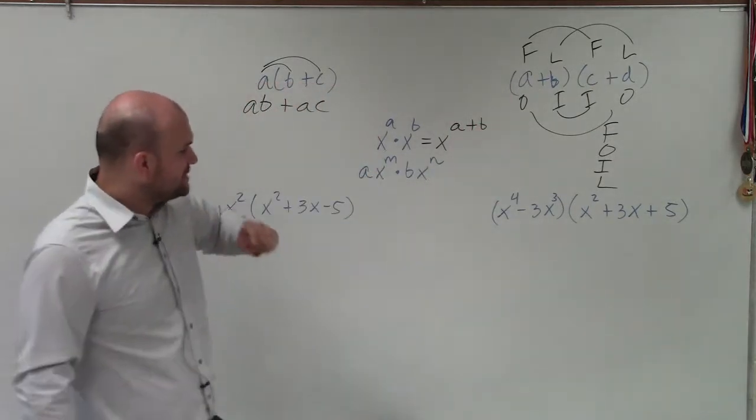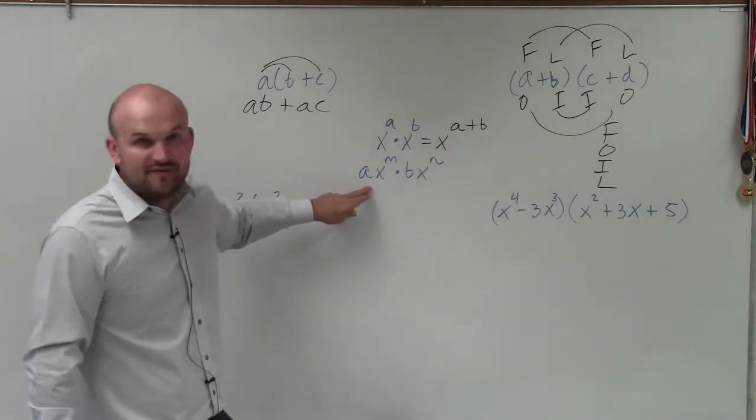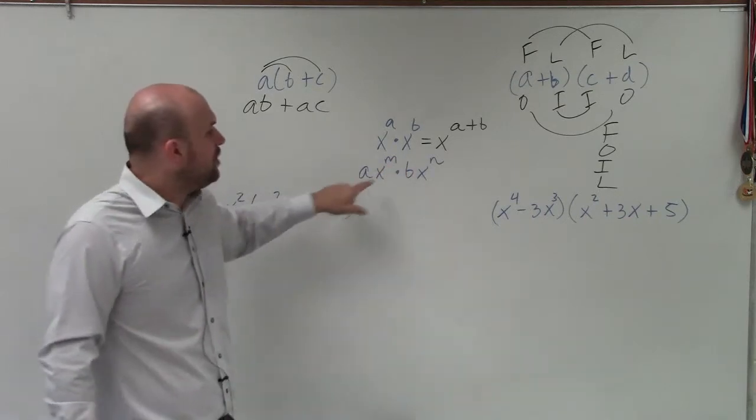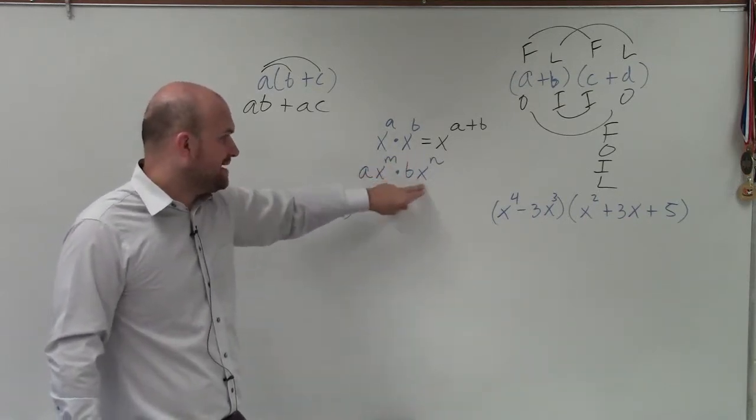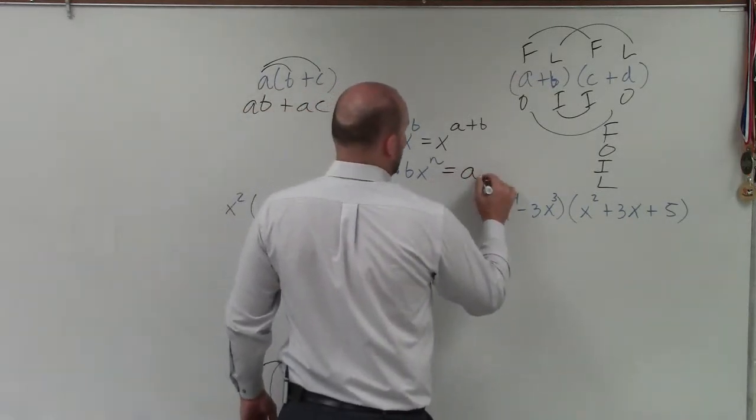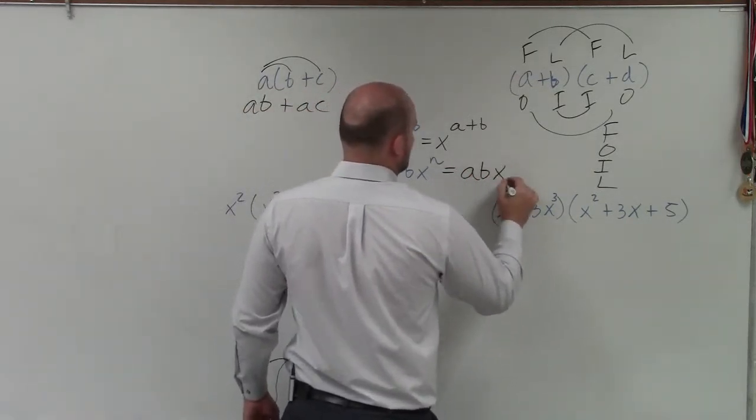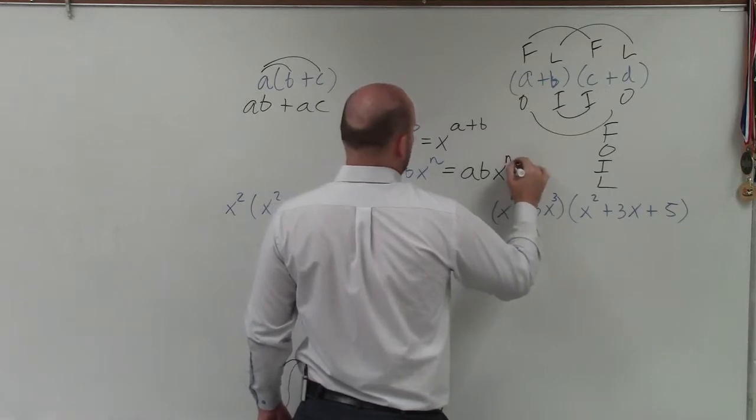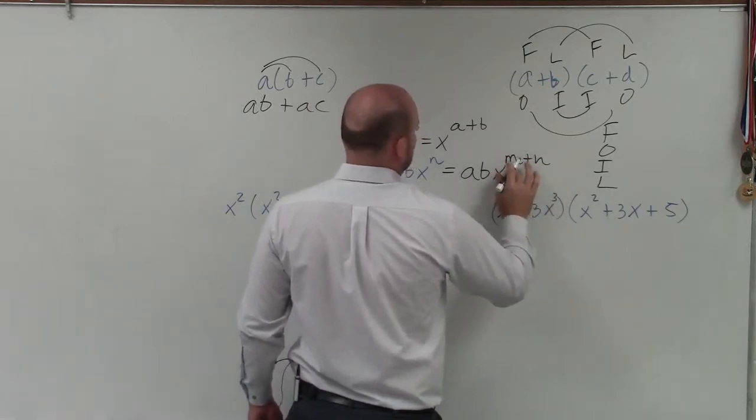Now, if you're multiplying two exponents and they have a coefficient, a and b, then you multiply the coefficients, the base remains the same, and you again add the exponents. So this would be a times b times x raised to the m plus n.